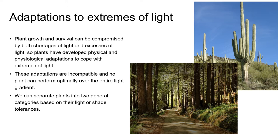Plant growth and survival can be compromised by both a lack of light and an excess of light, so plants have developed physical and physiological adaptations to cope with extremes of light. You've already learned about plants' physical adaptations to intense light in the unit on plant adaptations to heat and drought. Plant adaptations to either intense solar radiation or dense shade are incompatible, and no plant is able to perform optimally across the entire light gradient.